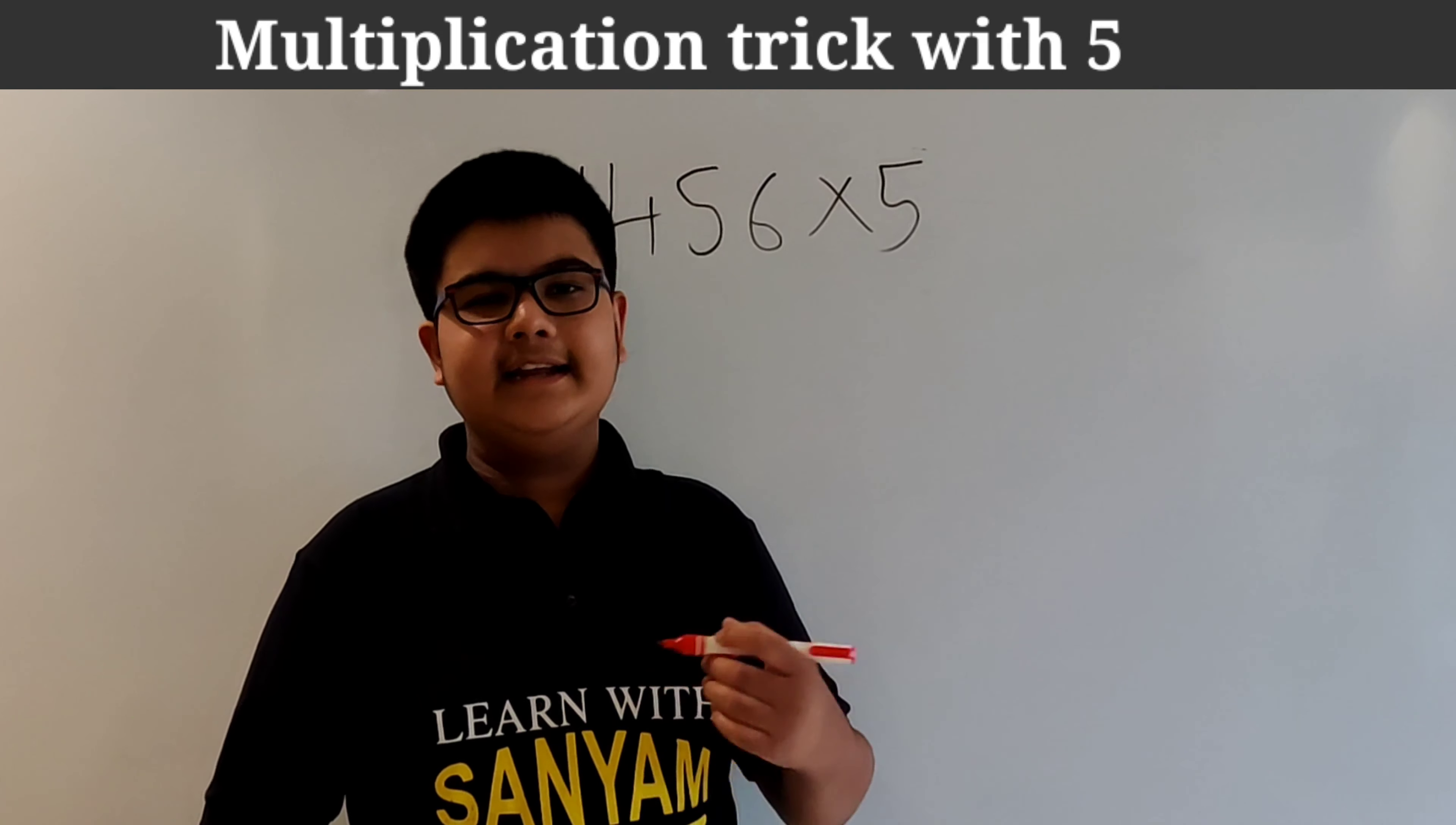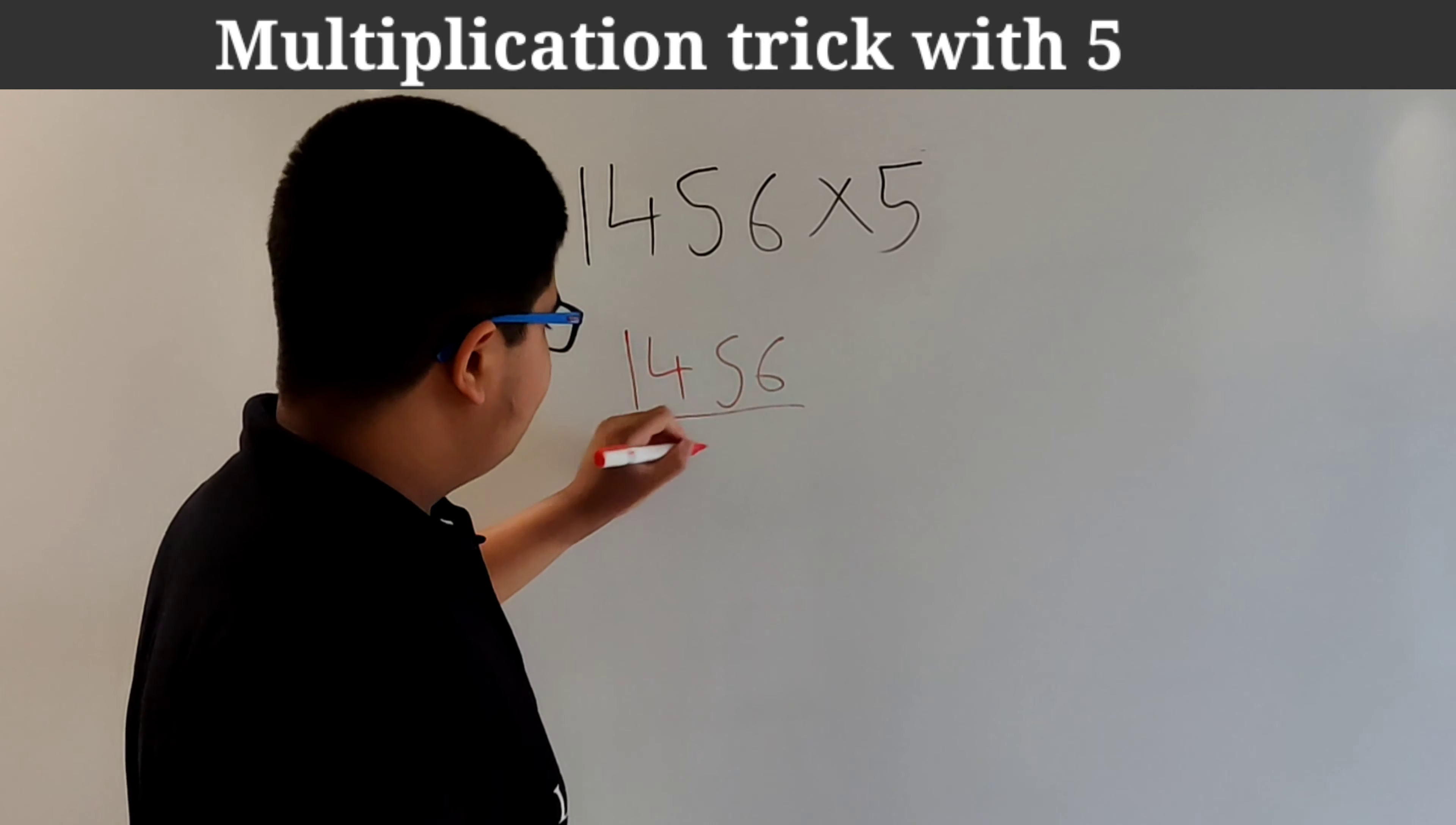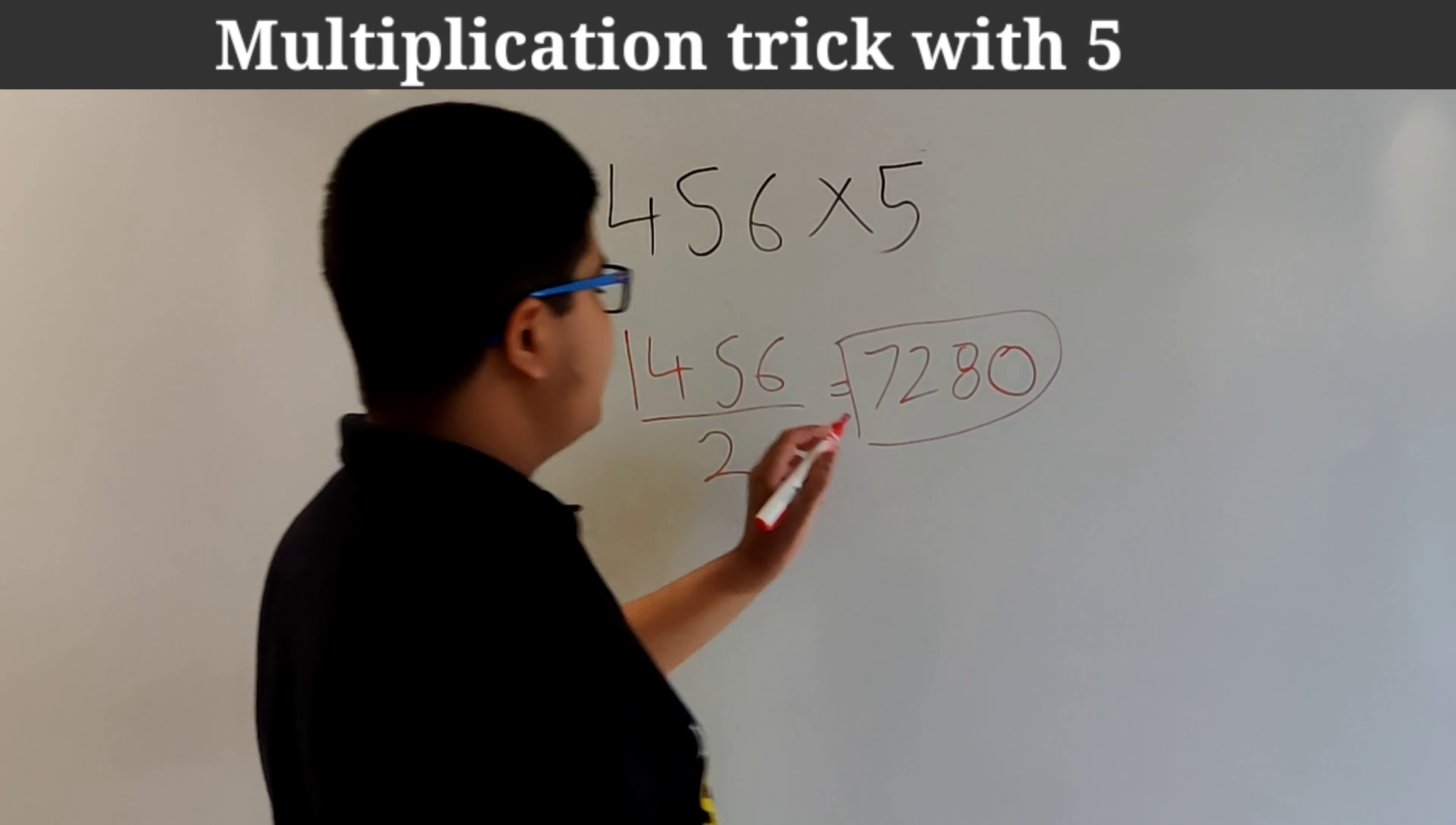So now let's take another number. This time we have 1456 and again we have to multiply it by 5. So for this step 1, divide the number by 2. So 1456 by 2 will give us 728. And now in step 2 just put a 0 behind our answer. So this is our answer 7280.